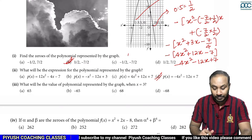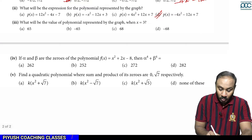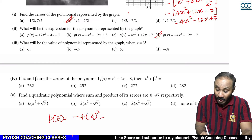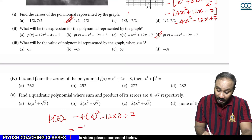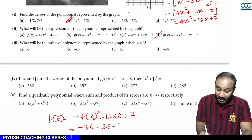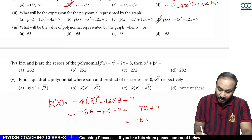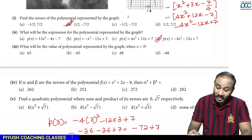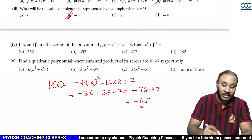What will be the value of the polynomial represented by the graph when x is equal to 3? Let's substitute x = 3 into the polynomial: minus (4 × 3² − 12 × 3 + 7). So 3² = 9, 4×9 = 36, 12×3 = 36. We get minus(36 − 36 + 7) — wait, 36 and 36 give 72, plus 7 gives 79... recalculating: the value comes out to 65. So at x = 3, the value is 65.